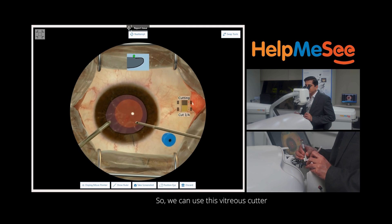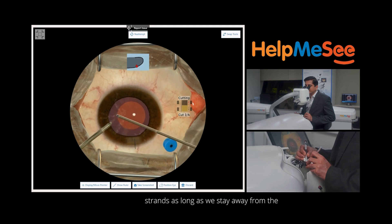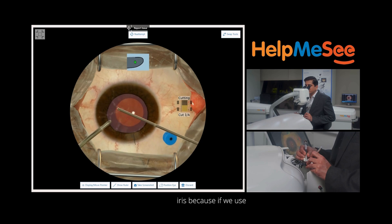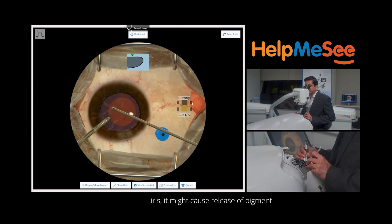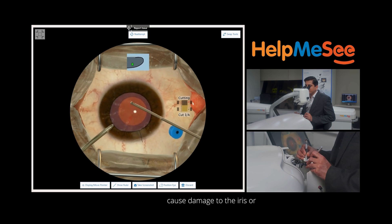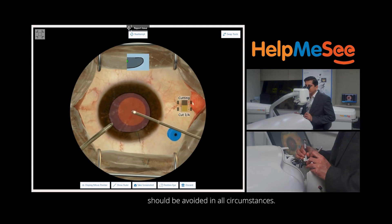We can use this vitreous cutter efficiently closer in the bag to remove all the vitreous strands as long as we stay away from the iris. If we use the cutter closer to the iris it might cause release of pigment, or it can even cause damage to the iris or create a hole within the iris which should be avoided in all circumstances.